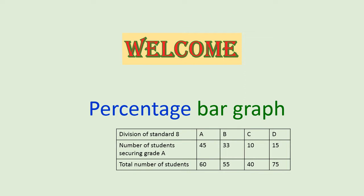Here division of standard 8: A, B, C, and D division. Number of students securing grade A and total number of the students are given. So let's see how to go about percentage bar graph.